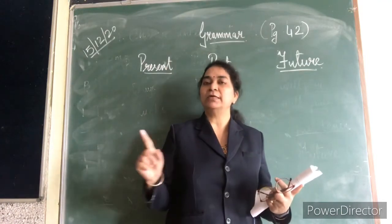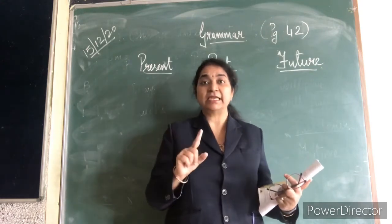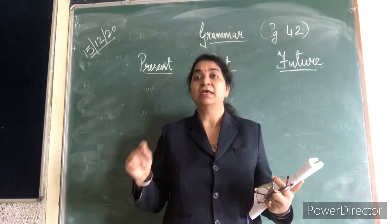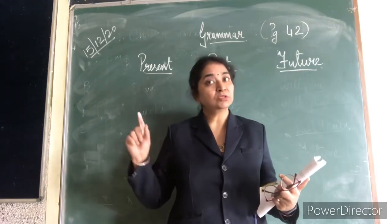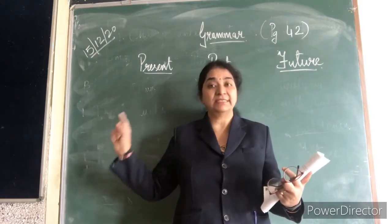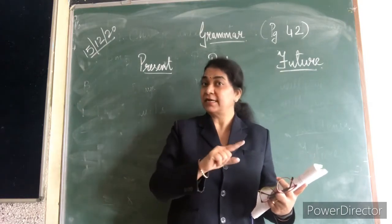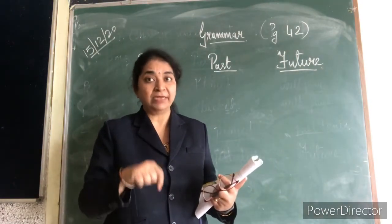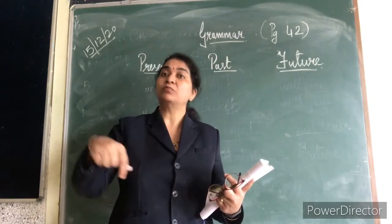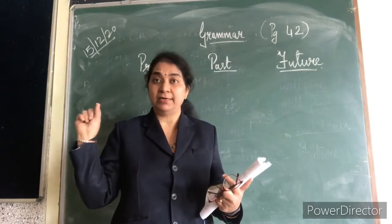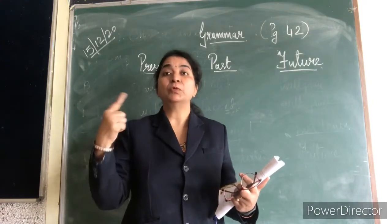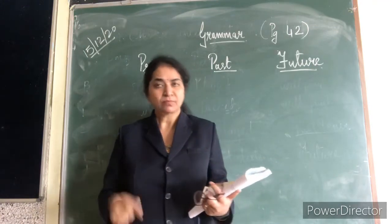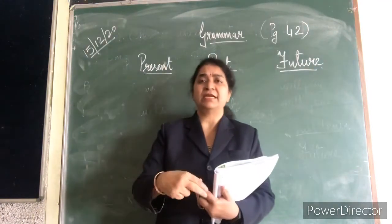So you have to learn the meanings of these three things, and you should understand by reading the sentence whether it is past, present or future tense. Present is what is happening now. Past is what has already happened. Future is what is going to happen. When we do the examples, you will understand it better.